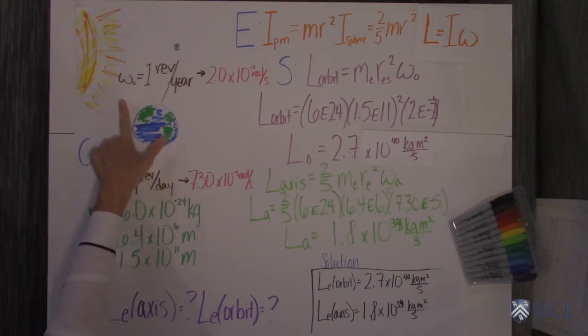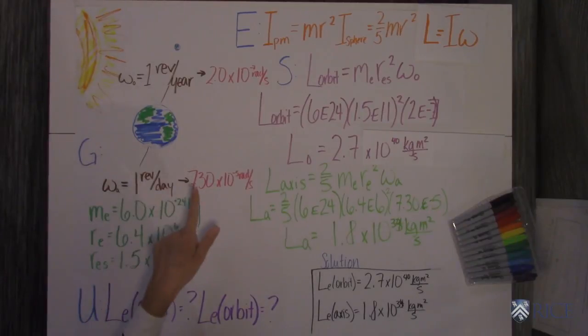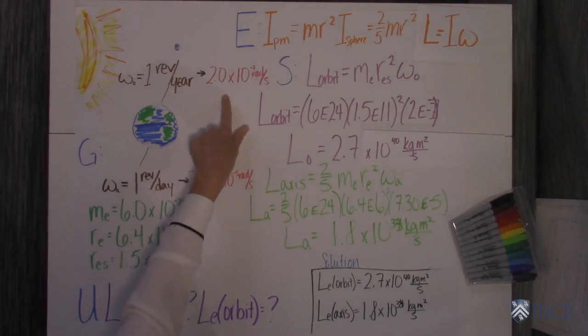First of all, we take the angular velocity of the Earth in orbit, which is one revolution per year, right? And then we convert that to radians per second and you get 2.0 times 10 to the negative 7 radians per second.